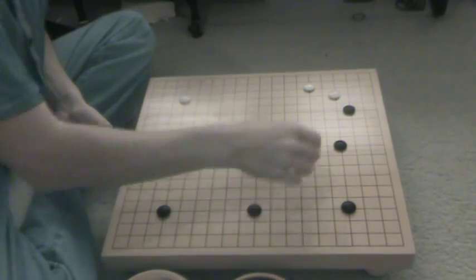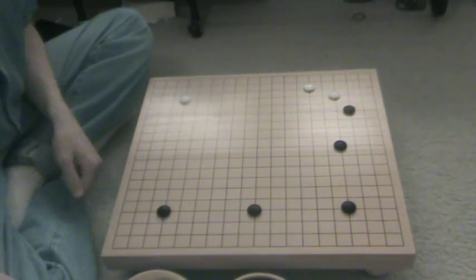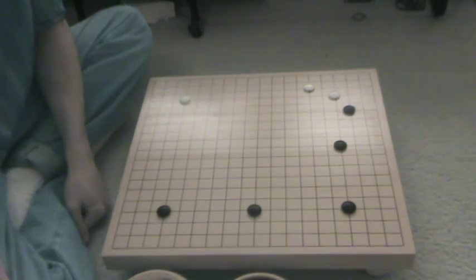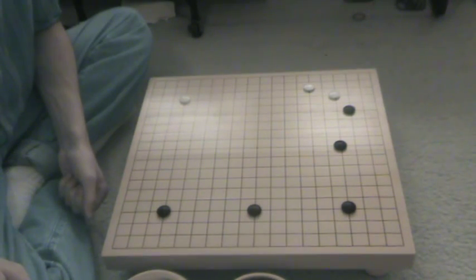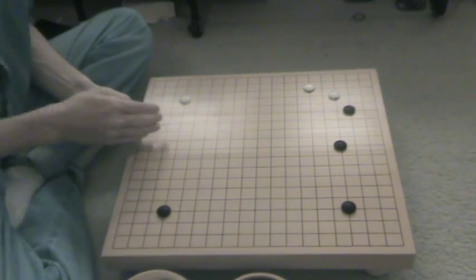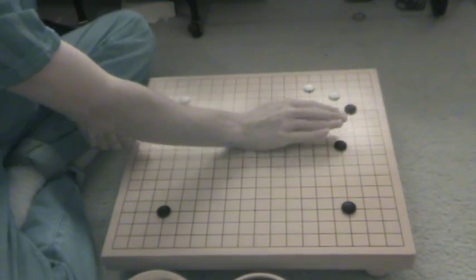But getting a double side, double wing, is probably bigger than just approaching the star point. So the idea here is, approach a Hoshi before the side,